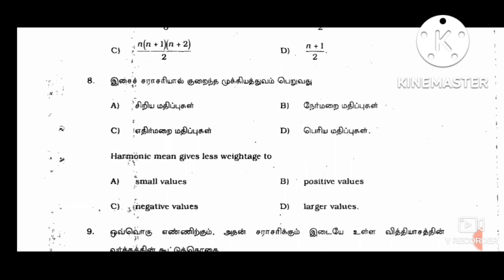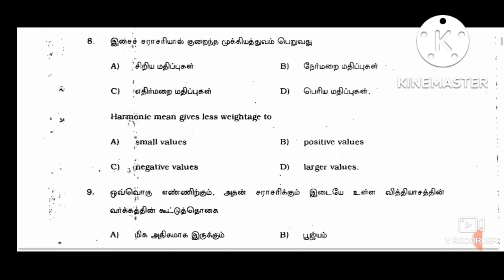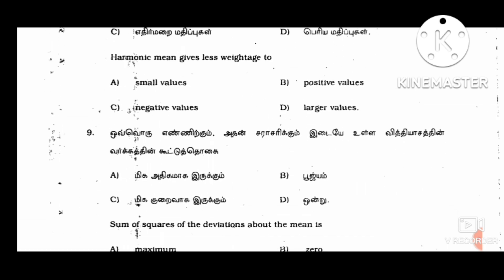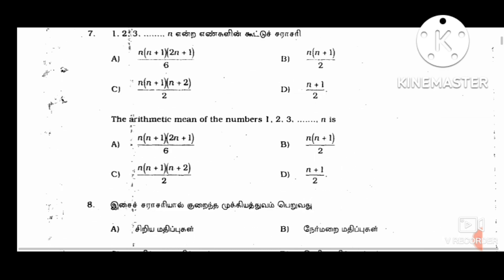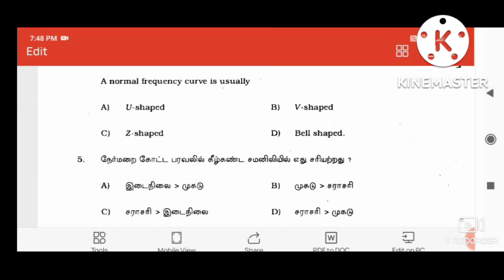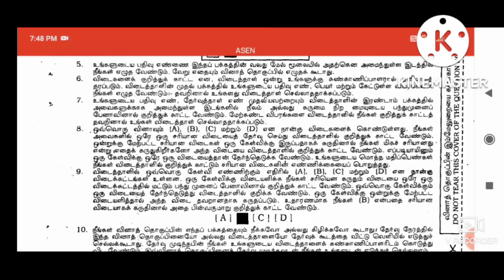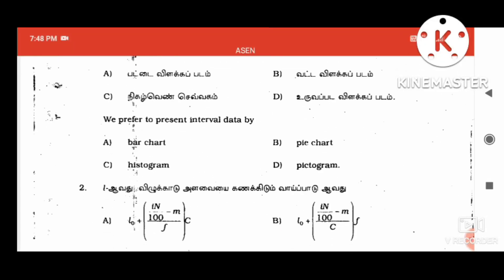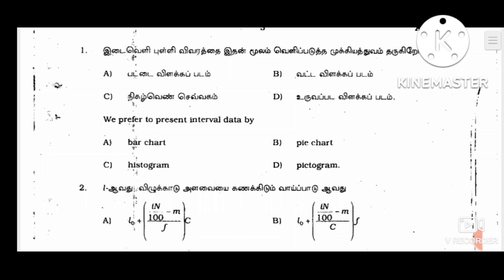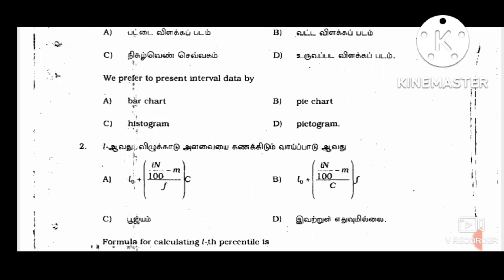The harmonic mean gives less weightage to smaller values. Where is the weightage? Where do small values work? Where do positive values work? Where do negative values work? So this is one of the statistics questions. We will discuss these questions. We will connect with the test page. Plus, we will be available in PDF file with a few characters — the first activities will arrive in PDF files.